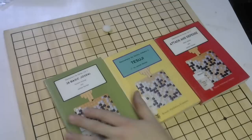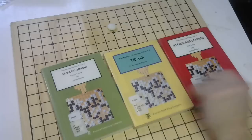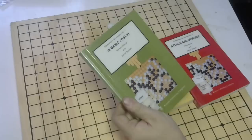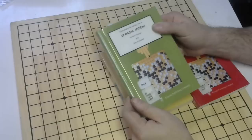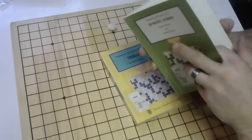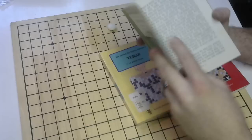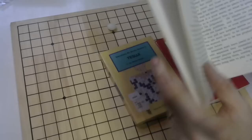Basically, each book focuses on one specific aspect of Go. For instance, 38 Basic Joseki. And it's exactly what the title says. The book goes over 38 different Joseki. And to give you an example, the book is divided among the different Joseki points. So you'll learn the 3-3 point, the 3-4 point, the 4-4 point, the 3-5 point, and the 4-5 point.